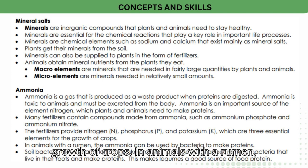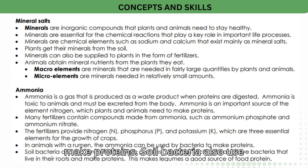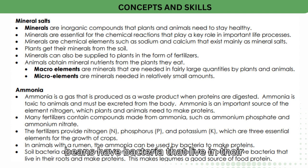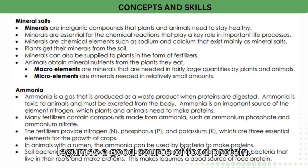In animals with a rumen, the ammonia can be used by bacteria to make proteins. Soil bacteria also use ammonia to make proteins. Legumes such as beans have bacteria that live in their roots and make proteins, which makes legumes a good source of food protein.